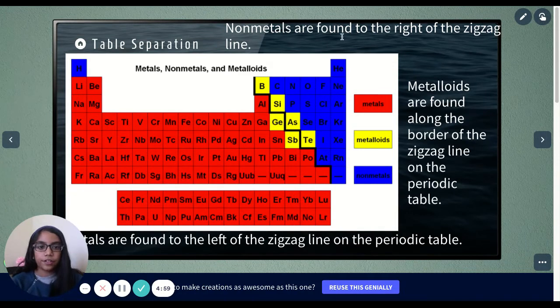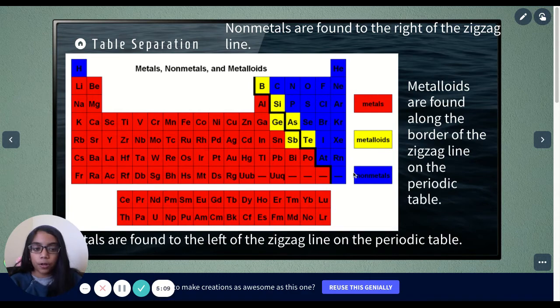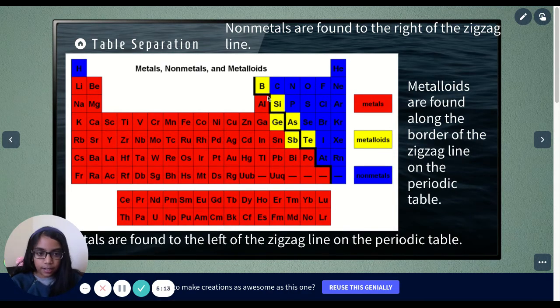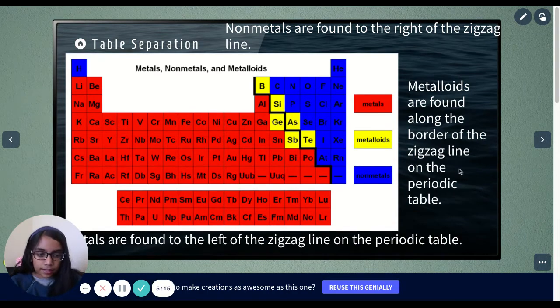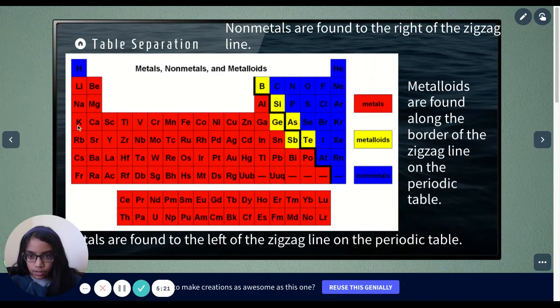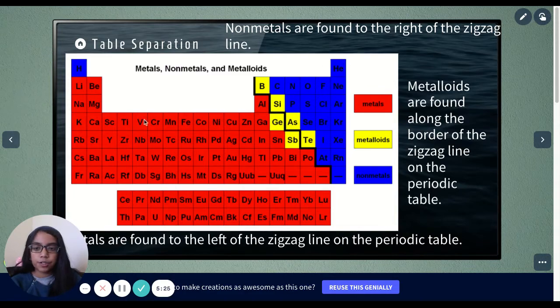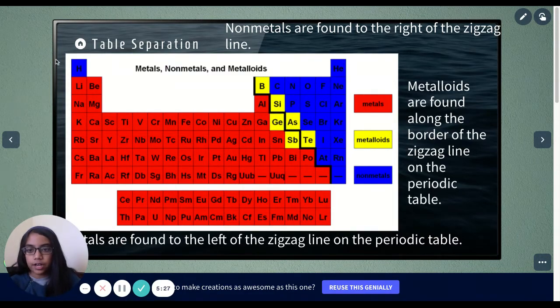Non-metals are found to the right of the zigzag. Over here, you can see this black zigzag. The blue ones are non-metals, and they're found to the right. Metalloids are found along the border of the zigzag. Over here, where you can see the yellow. And metals are found to the left of the zigzag line. All these red ones. For the non-metals, the only exception is hydrogen, which is over here on the corner.